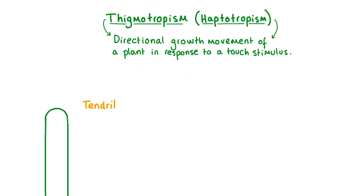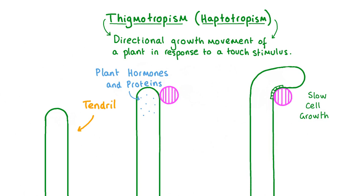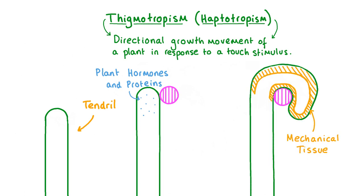By taking a closer look at one of these tendrils we can see how this happens. The tendrils of climbing plants extend into the air until they come into contact with a solid object, which triggers the release of certain plant hormones. This causes the cells on the side of the tendril in contact with the object to grow slowly, while the cells on the opposite side are stimulated to grow more quickly, causing the tendril to curl around the object. The tendril also becomes thickened with mechanical tissue, providing climber plants with strong support.